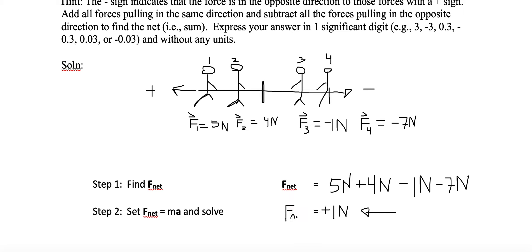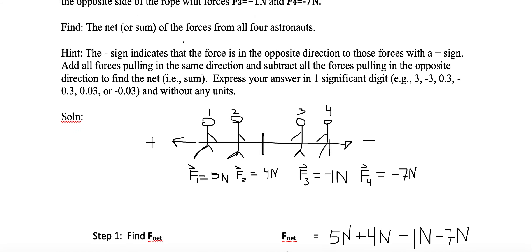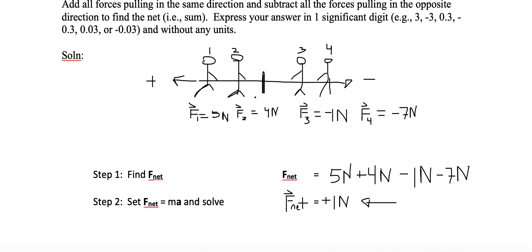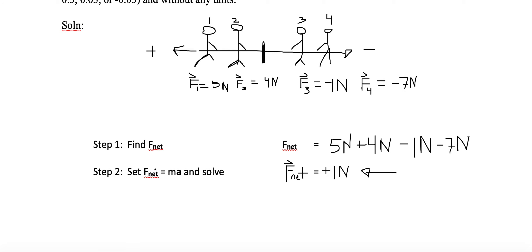Let's review what was asked: find the net sum of the forces from all four astronauts. Step two would normally be taking F-net and setting it equal to MA, but we don't need to do that here. We only needed to solve for the net force, and that is our answer — 1 newton to the left.